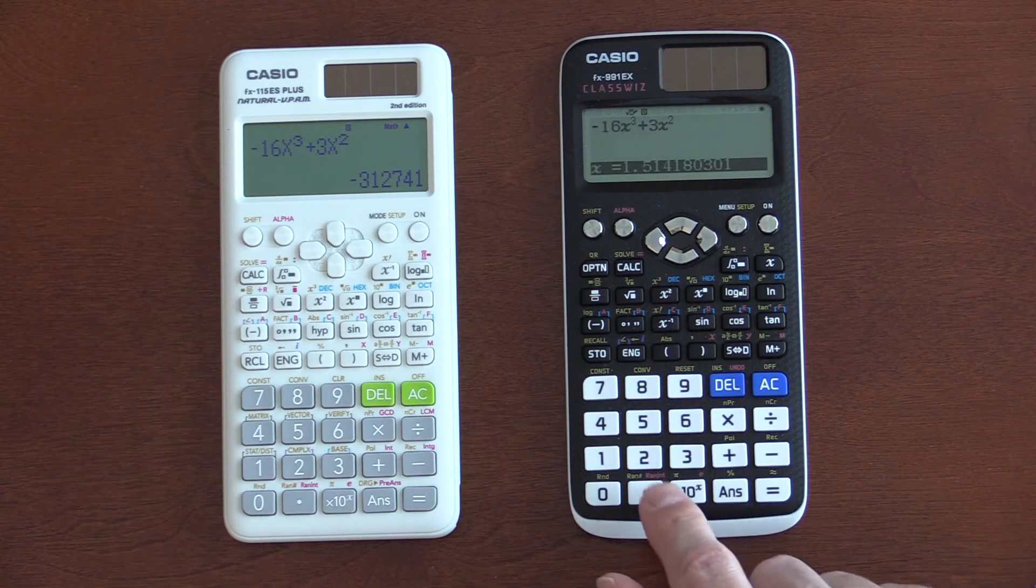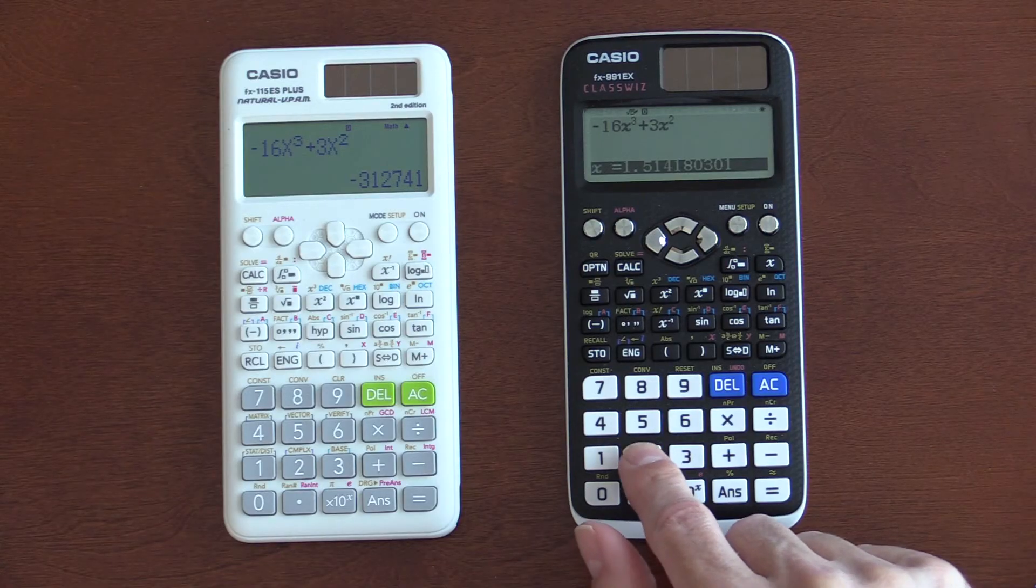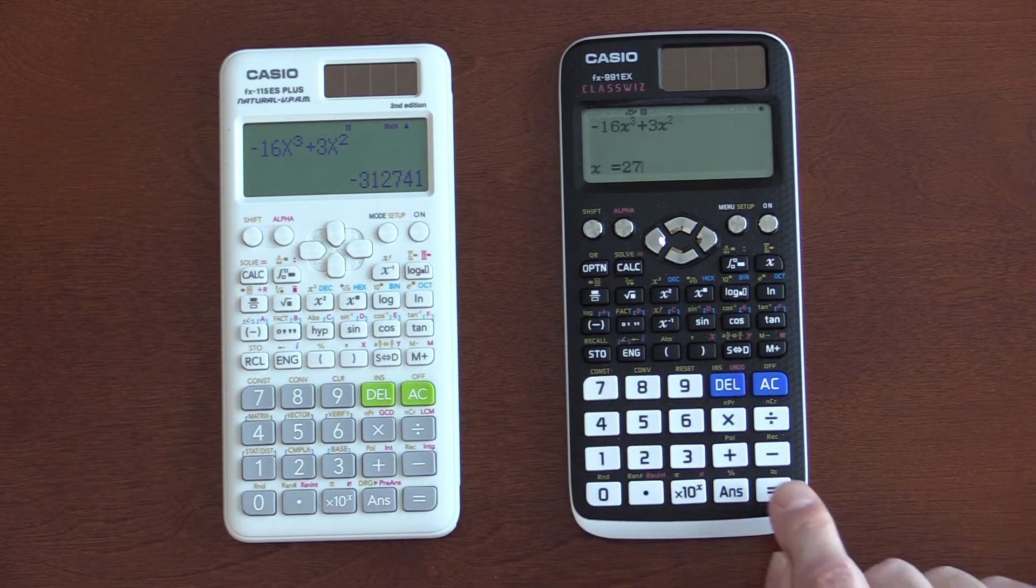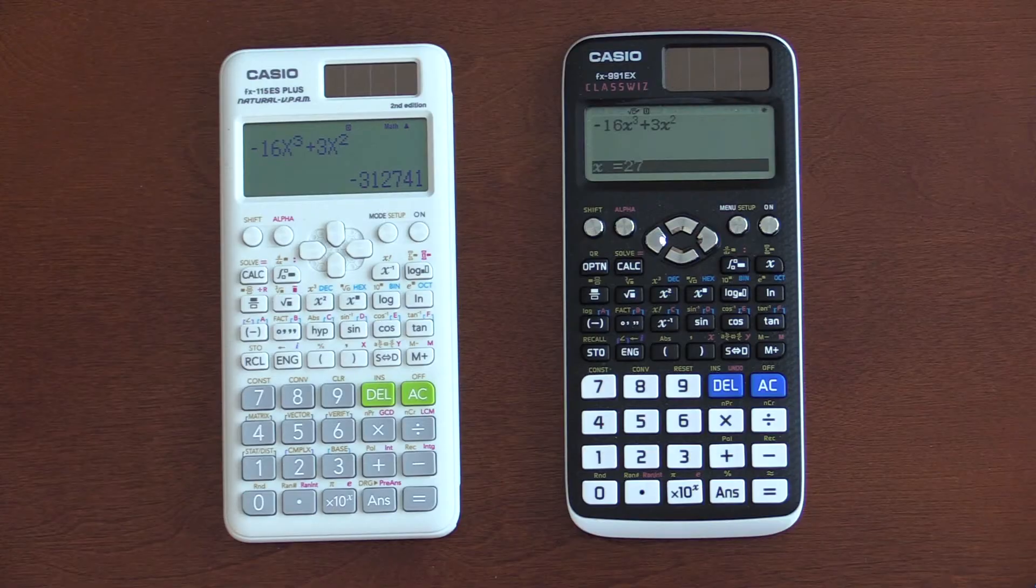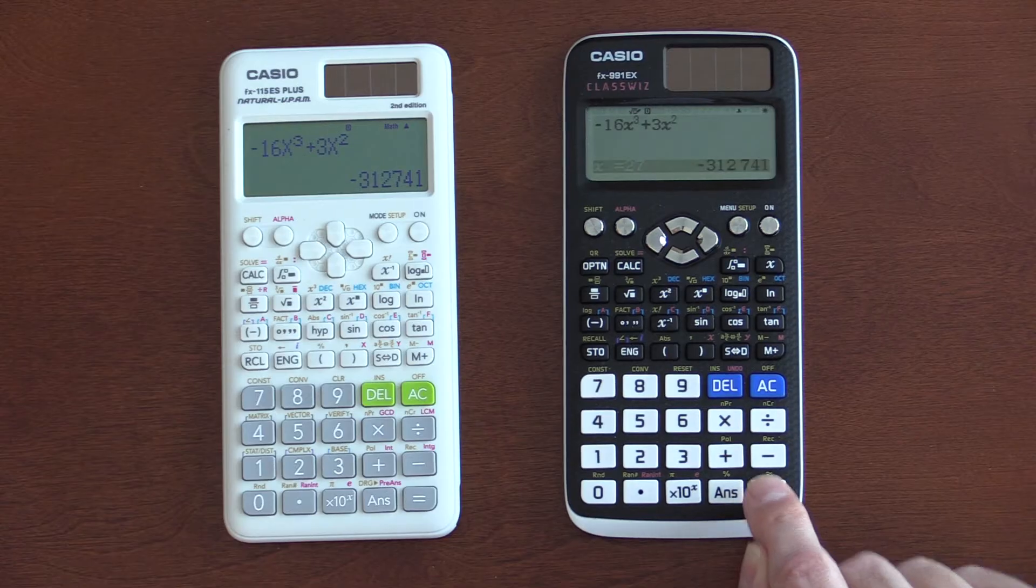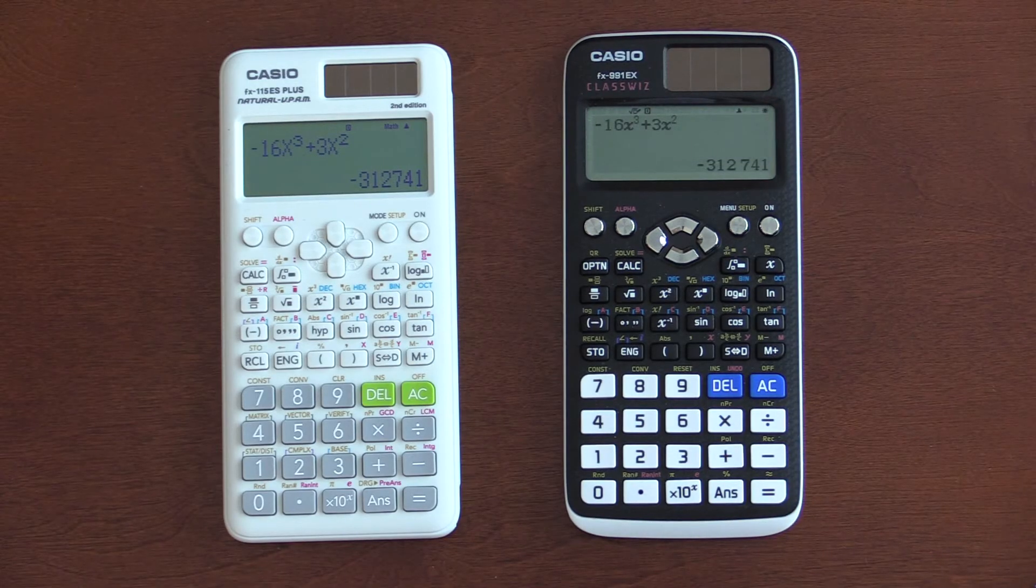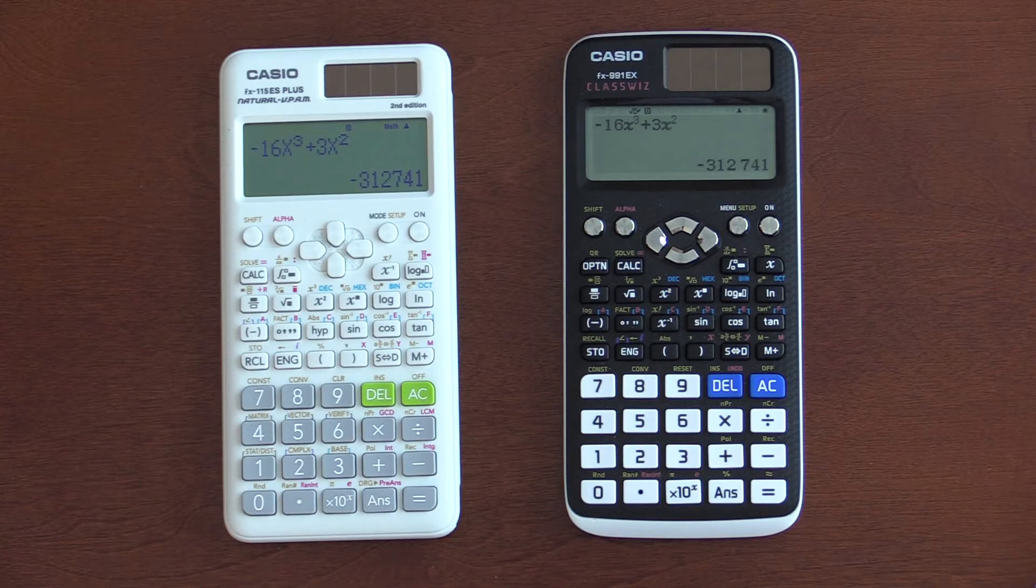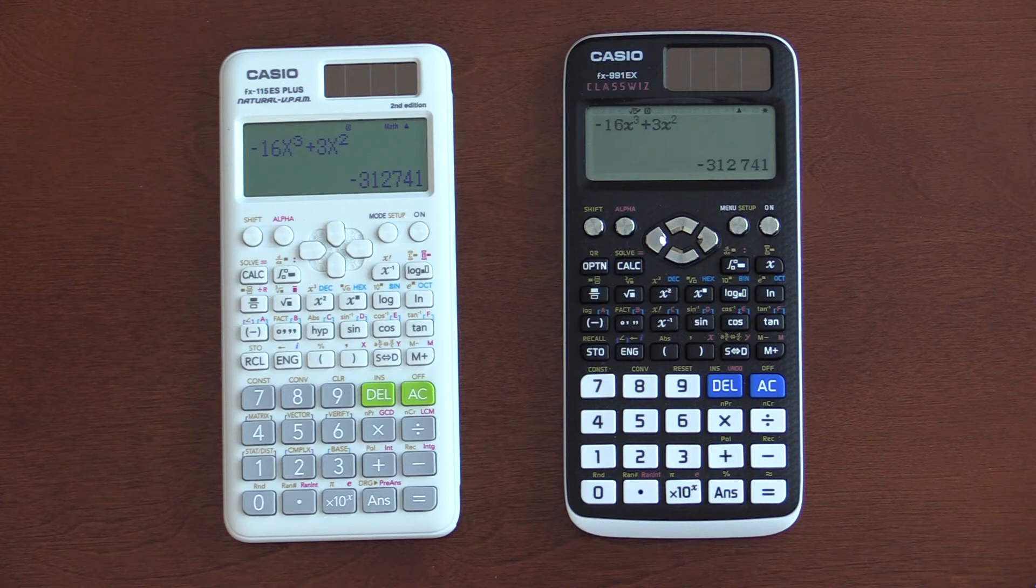On the EX, I type in 27 for my x value. And, I hit equal and I get 27. That's not the answer. You have to hit equal again. And, then you get the answer. With some nice digit separators. That throws some students. It's just not intuitive.